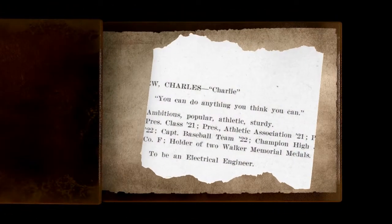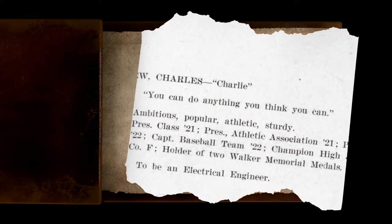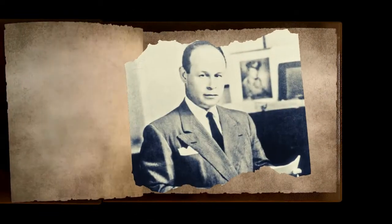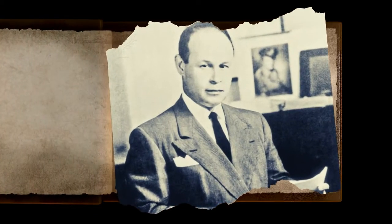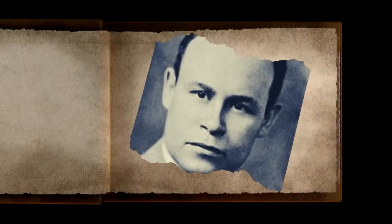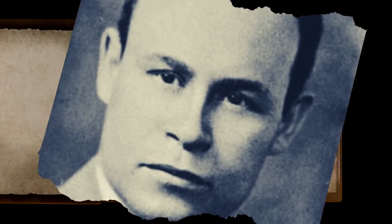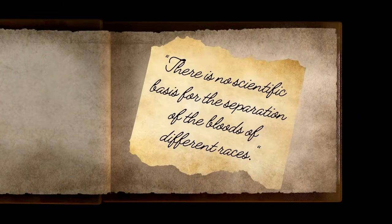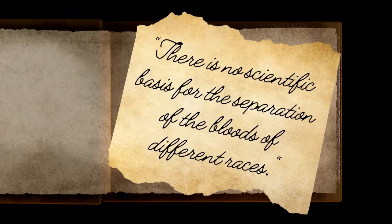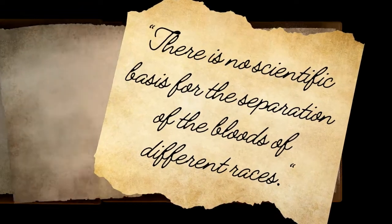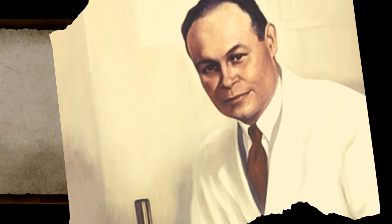And people like Charles Richard Drew, who in high school is quoted as saying, "You can do anything you think you can." Who went on to medical school in Canada, where he studied methods for preserving blood. Who became the top national authority on blood banking. And who, when he found out that the U.S. Army was segregating blood by race, famously said, "There is no scientific basis for the separation of the bloods of different races." He later became a professor at Howard University, where he fostered a brand new generation of Black American surgeons.